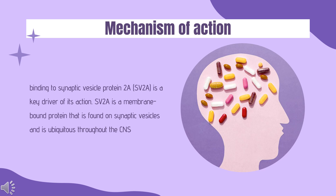Mechanism of Action: The exact mechanism through which levodiracetam exerts its antiepileptic effects is unclear, but is thought to be unique amongst other antiepileptic medications. Current knowledge suggests that levodiracetam binding to synaptic vesicle protein 2A (SV2A) is a key driver of its action. SV2A is a membrane-bound protein found on synaptic vesicles and is ubiquitous throughout the CNS. It appears to play a role in vesicle exocytosis and in the modulation of synaptic transmission by increasing the available amount of secretory vesicles for neurotransmission. Stimulation of presynaptic SV2A by levodiracetam may inhibit neurotransmitter release, but this action does not appear to affect normal neurotransmission, suggesting that levodiracetam exclusively modulates the function of SV2A only under pathophysiological conditions.